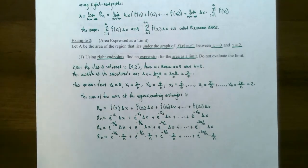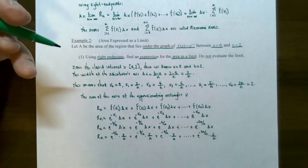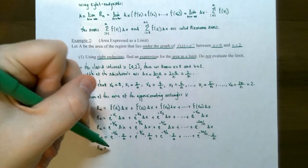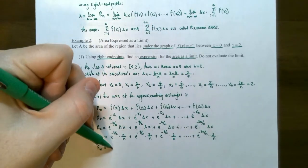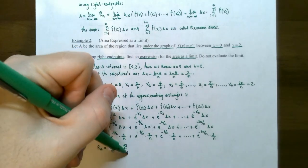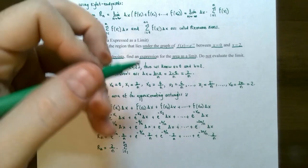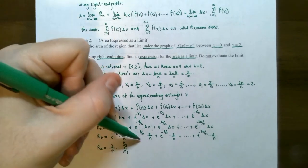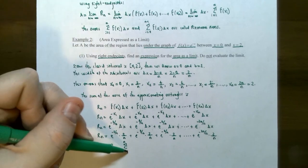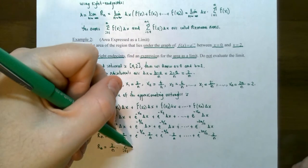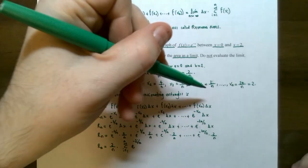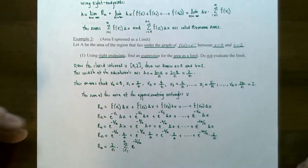We can rewrite this using sigma notation. R sub n equals 2 over n — factored out since it appears in every term — times the sum from i equals 1 to n of e to the negative 2i over n, because x sub i equals 2i over n. That's what the Riemann sum looks like.